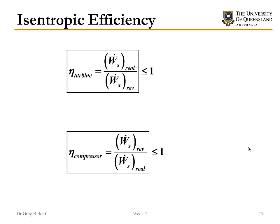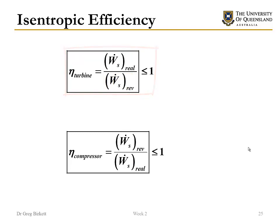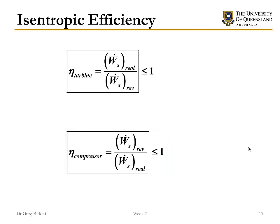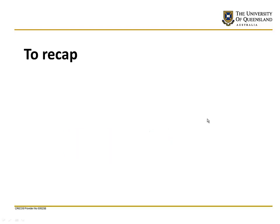If we want to find the efficiency of a turbine or a compressor, we compare against the isentropic — or reversible — case. For isentropic efficiency of a turbine, it's the real work generated divided by the reversible work; the reversible work will always be greater, so efficiency is always less than one. For a compressor, the reversible work is always less than the real work required — the reversible work is the minimum amount of work required. This is what we mean by isentropic efficiency.